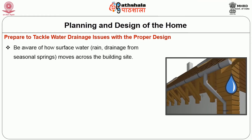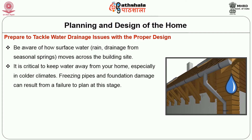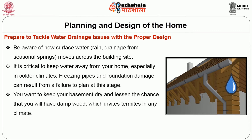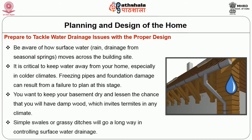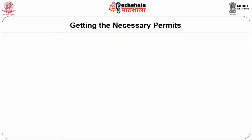Larger windows on the north or south face of your house will help heat the house through solar gain in colder climates. In the northern hemisphere, build windows facing south; in the southern hemisphere, facing north. Be aware of how surface water — rain drainage and seasonal springs — moves across the build site. It is critical to keep water away from your home, especially in colder climates, to prevent freezing pipes and foundation damage. Simple swales or grassy ditches will go a long way in controlling surface water drainage.